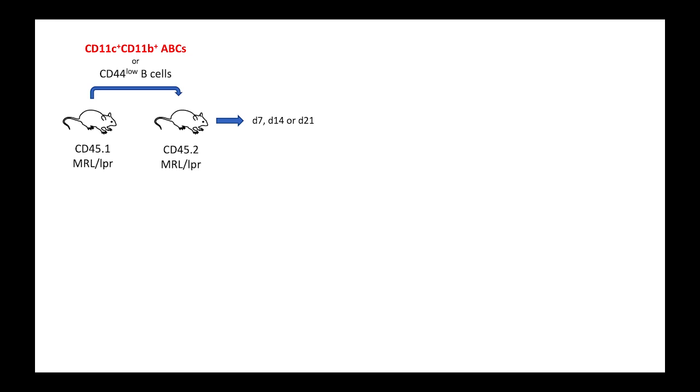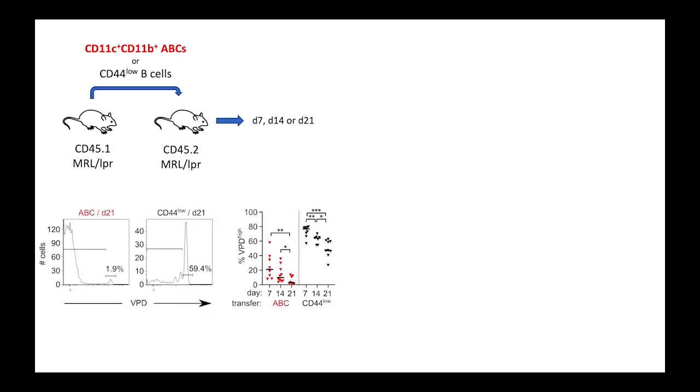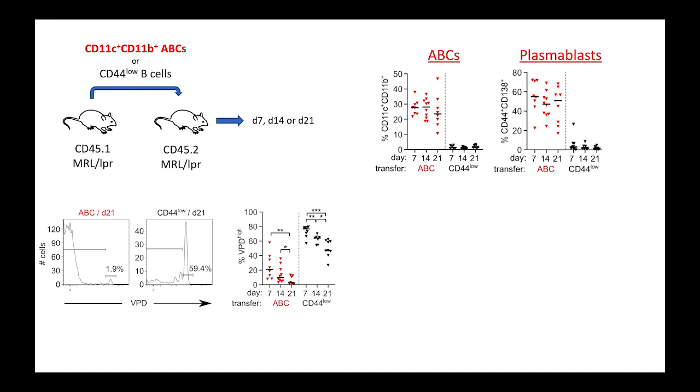In an adoptive transfer system, we found that CD11C, CD11B double-positive ABCs proliferate rapidly in vivo. While some transferred ABCs maintained the ABC phenotype for up to 21 days post-transfer, many had differentiated to plasmoblasts or even entered the germinal center compartment at later times after transfer.